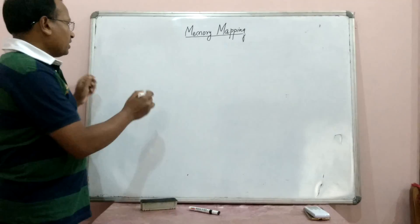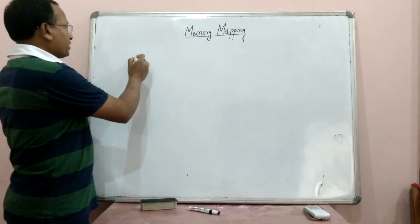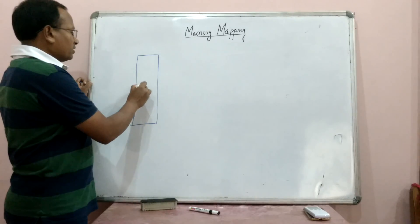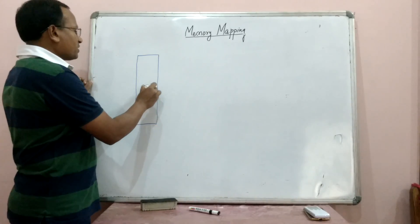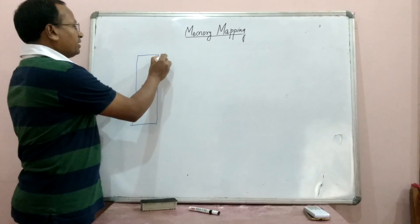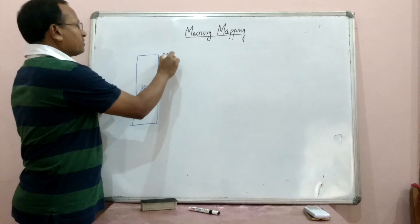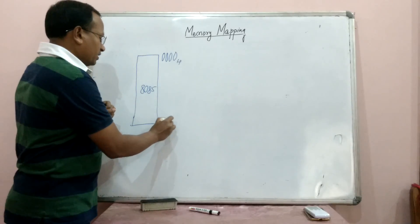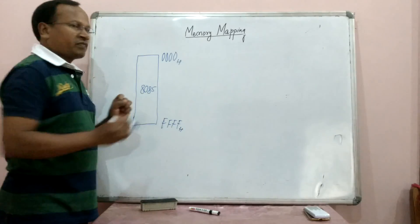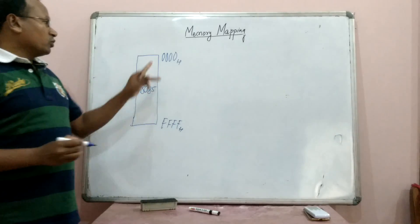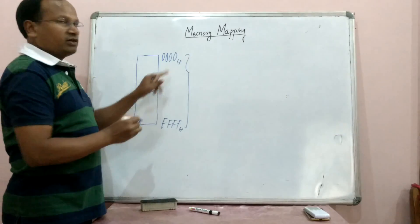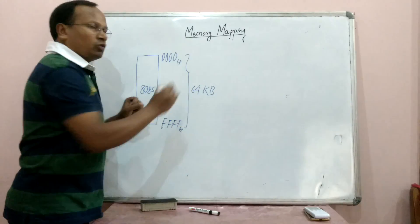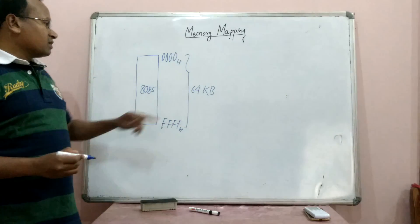In any computer architecture, the memory map — if we talk about, for example, a basic microprocessor unit, the 8085 — we know that its memory begins from 0000H to FFFFH. The total memory space is 64KB. How do we calculate the memory space as 64KB?